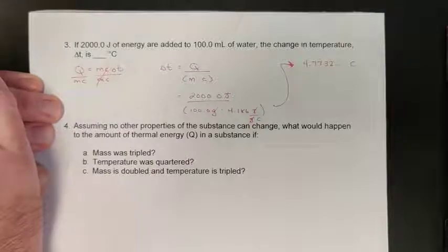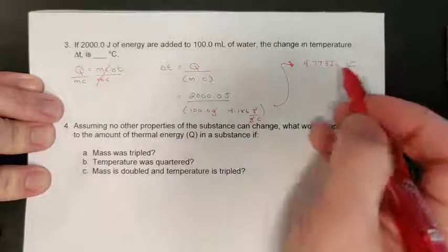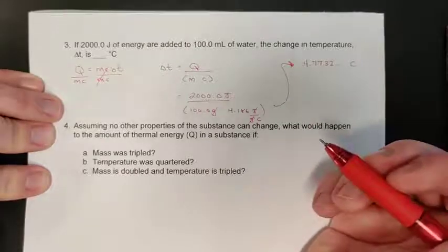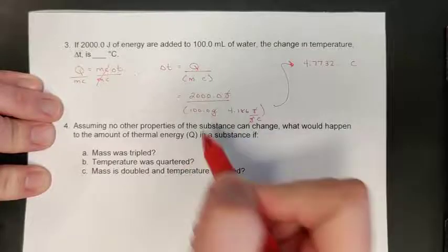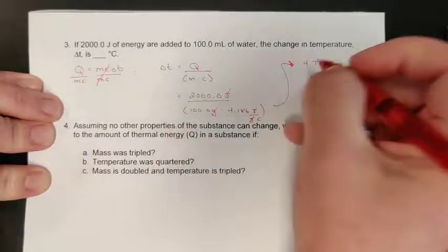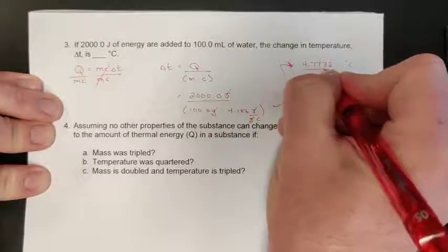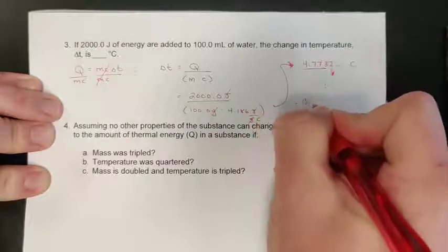Do this math, put it over here, and we get 4.7732 dot dot dot degrees C of temperature change. Again, we do have sig digs to correct here. Your calculator rarely tells you the correct answer; it usually has to be modified for the digits. We have five with our energy, four with our specific heat and our mass, so there's four digits right there. The two rounds down, and so my correct answer is 4.773 degrees C of temperature change.